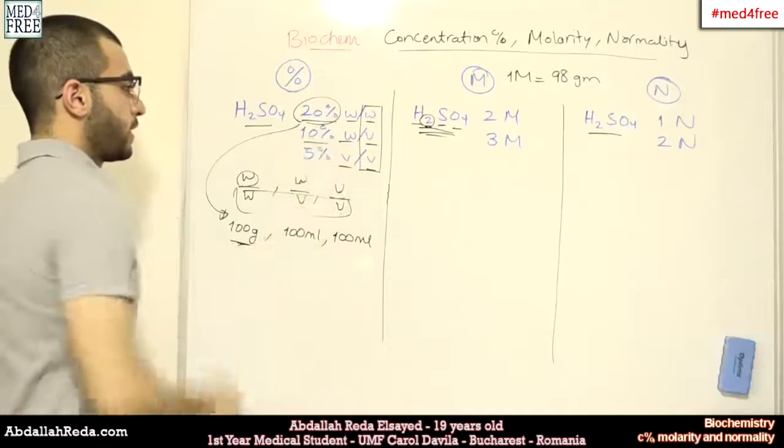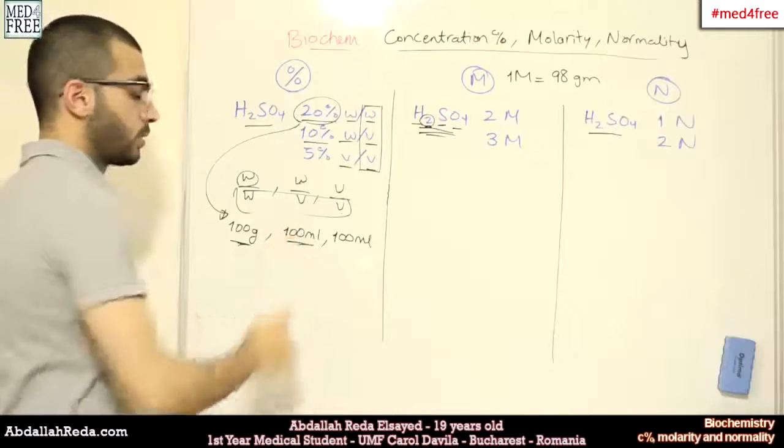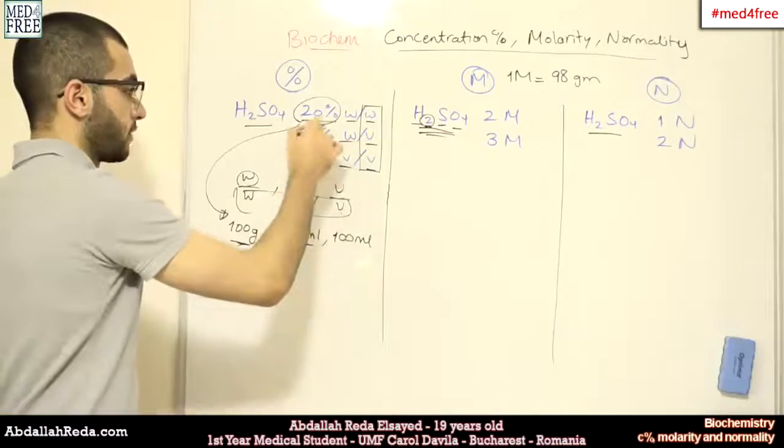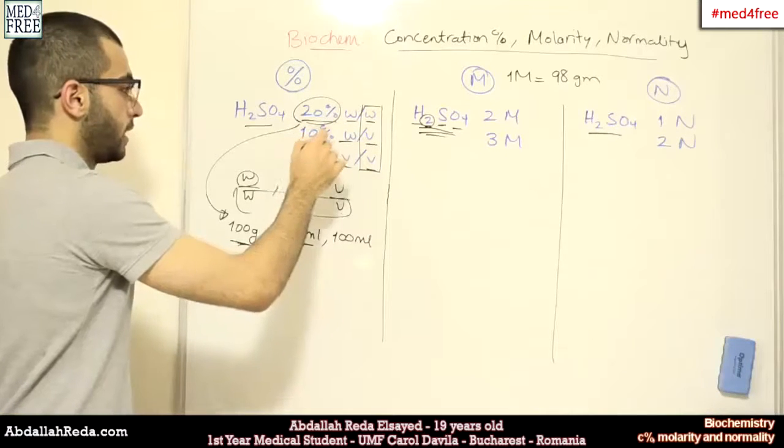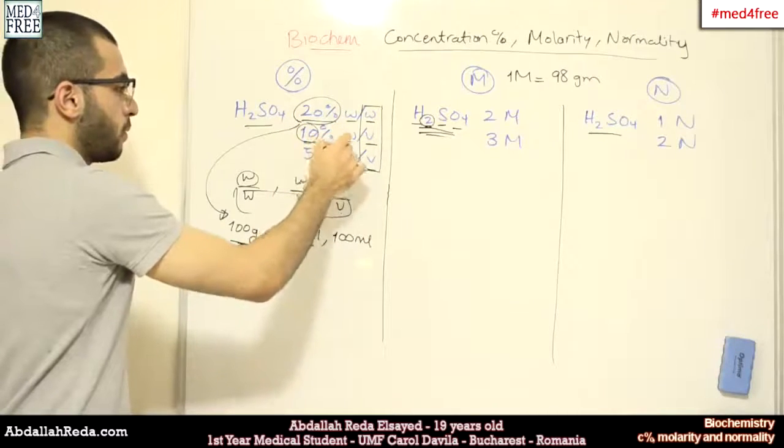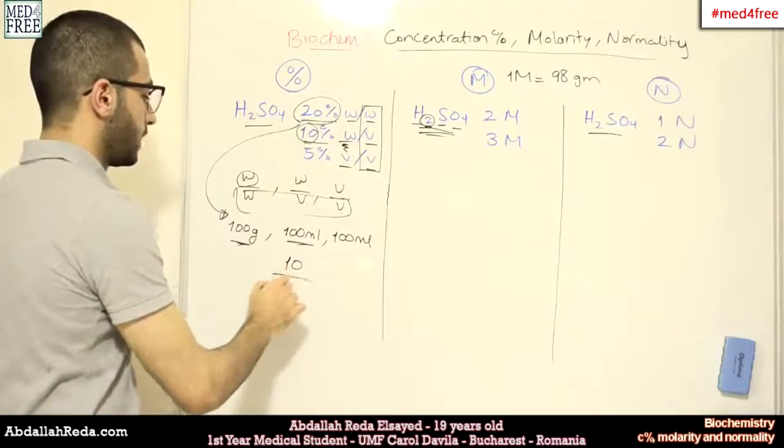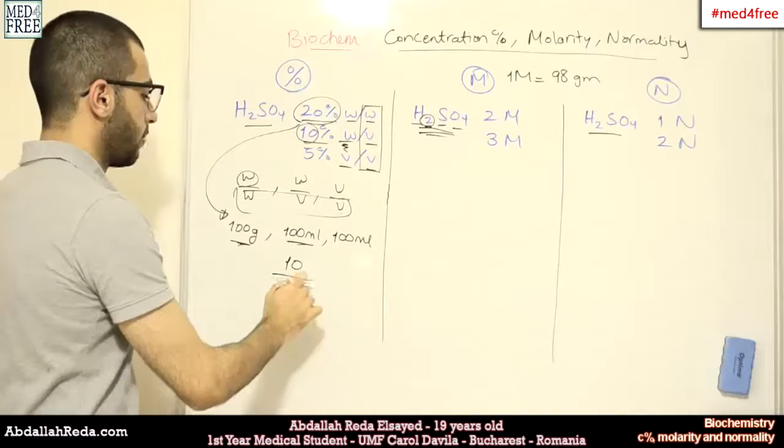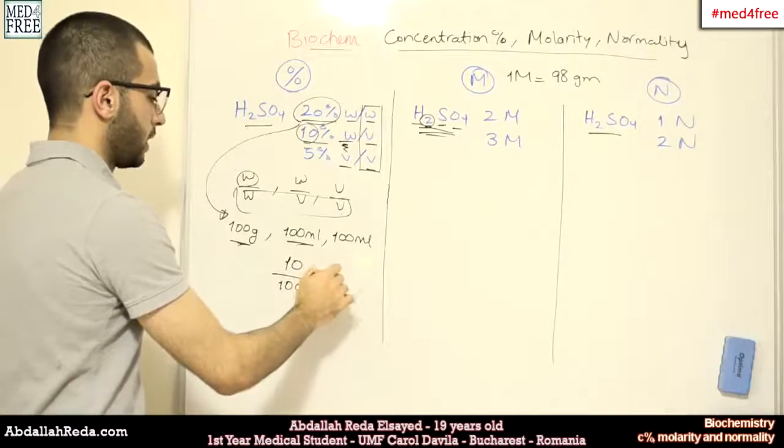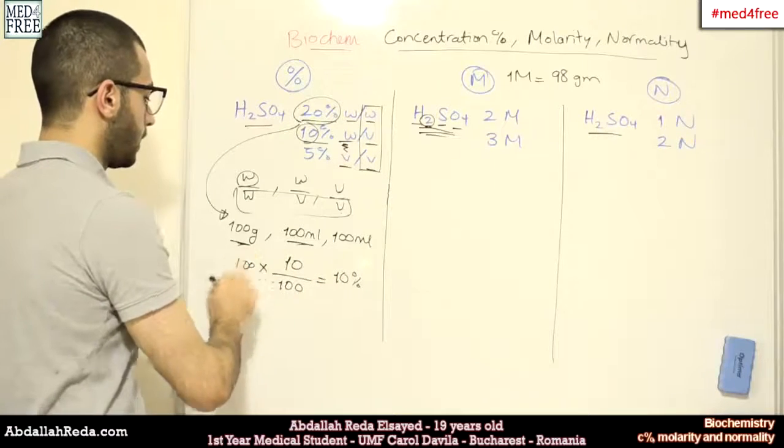For the 10% weight per volume, what does it mean? It means that in every 100 milliliters of this kind of solution, there is a 10% ratio, which is 10 grams. Of course, if you divide 10 grams by 100 milliliters, you get 10%. Of course, this will be multiplied by 100.